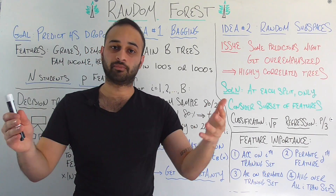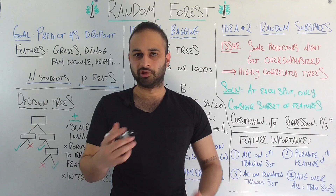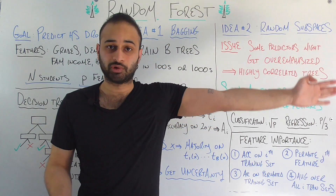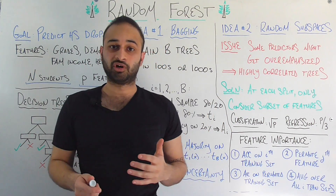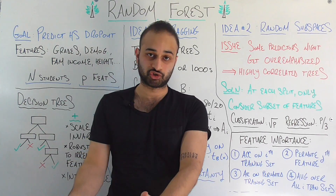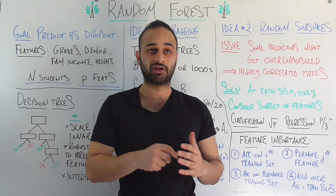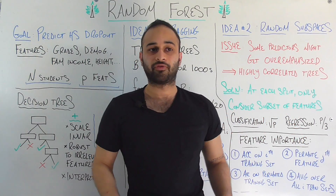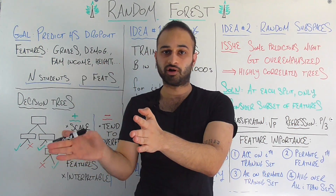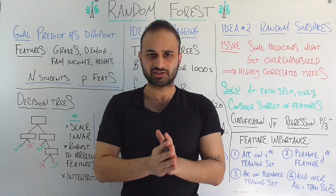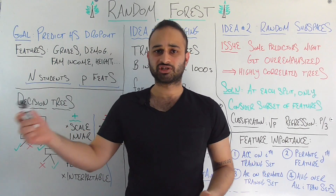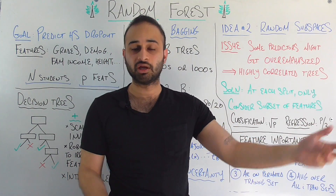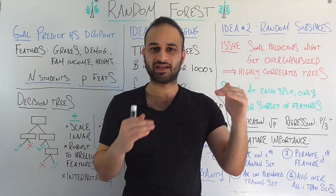We call those decisions T1(X) all the way to TB(X). To make a final decision, we simply take a majority vote — if you're doing a regression problem you might take an average. We ask each tree its decision, take a majority vote, and that's the decision we go with. This also offers an added bonus of prediction uncertainty. For example, if we train a thousand decision trees and the vote is 600 to 400, that is a very different situation from 900 to 100. In the 900-100 case we're a lot more confident, since only 10% of trees say it goes the other way.